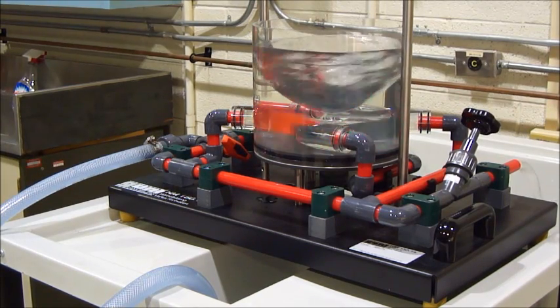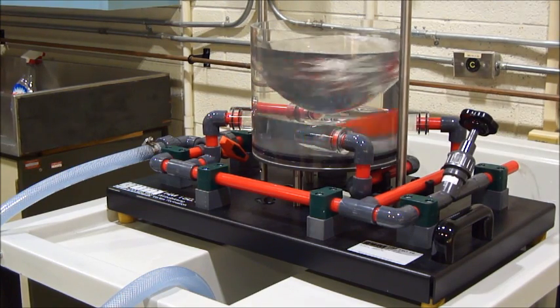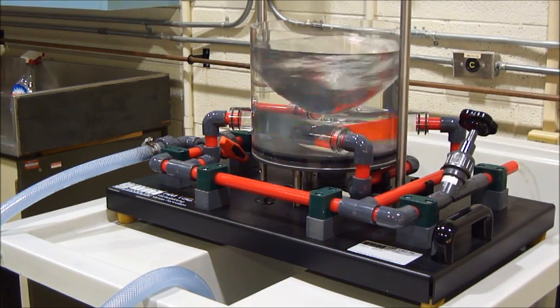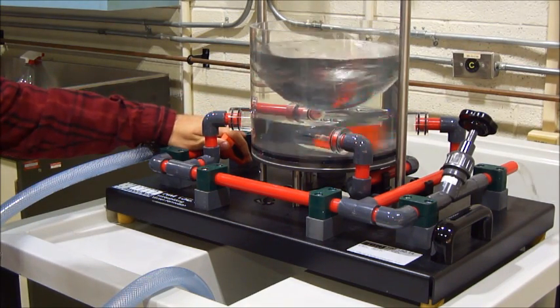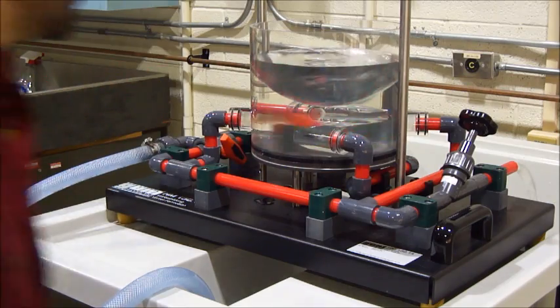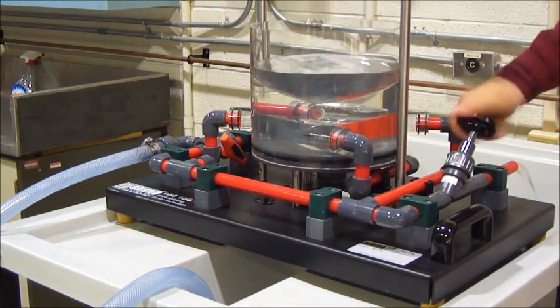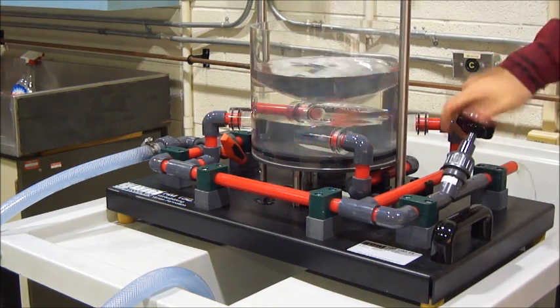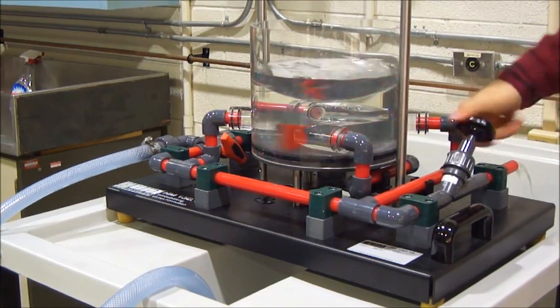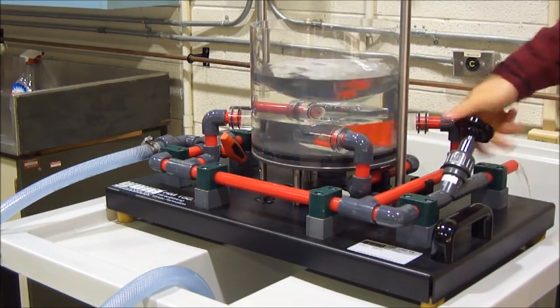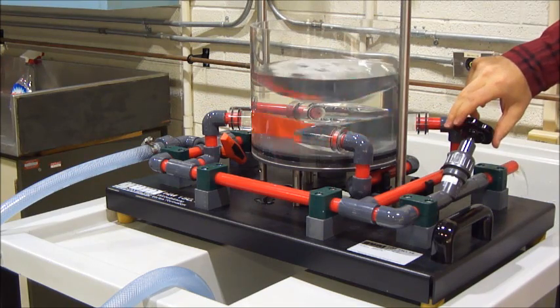This completes the experiment for one velocity. Now, it needs to be repeated for a minimum of two other velocities. To do this, rotate the selector valve slightly towards the closed position and partially close the overflow valve. Adjust both simultaneously if needed to maintain a constant water height. Wait for the vortex shape to stabilize and take the height and velocity measurements as done before.